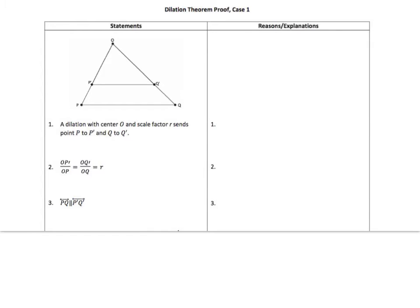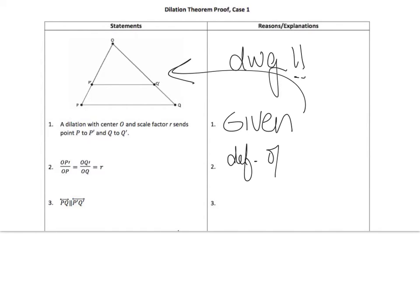All right. First of all, we have our triangle. Our first statement, a dilation with center O and scale factor R sends point P to P prime and Q to Q prime. This is given because it's in the drawing. Secondly, we just learned this one. So it's the definition of dilation.